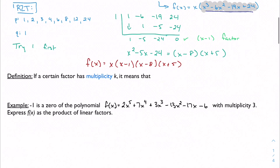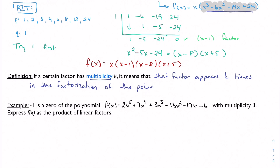Next we want to talk about multiplicity — I don't always have to have distinct factors, I can have repeated roots. If any factor has multiplicity k, it means that factor appears k times in the factorization of the polynomial. The simplest example: x² + 2x + 1 factors into (x + 1)², so it's degree 2 and has two roots. The factor x + 1 appears twice — that's multiplicity 2.